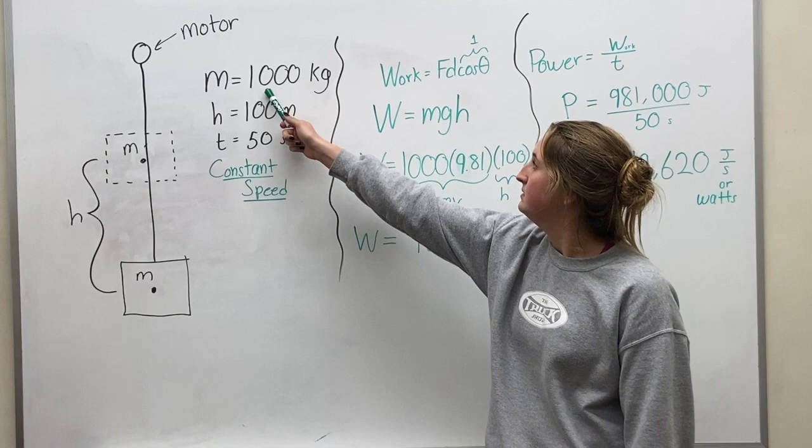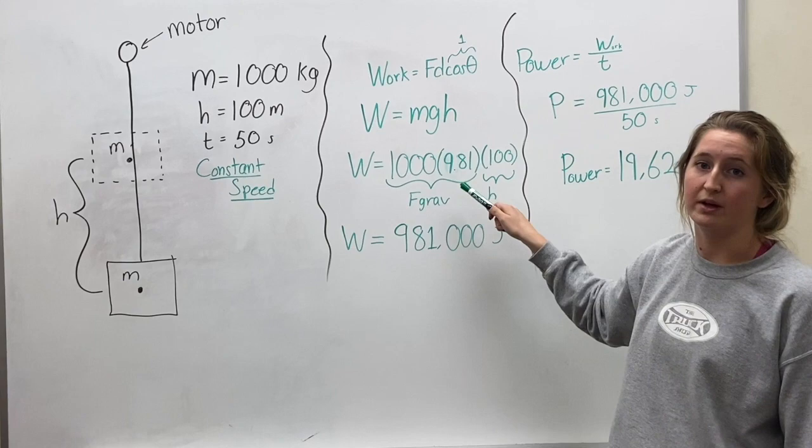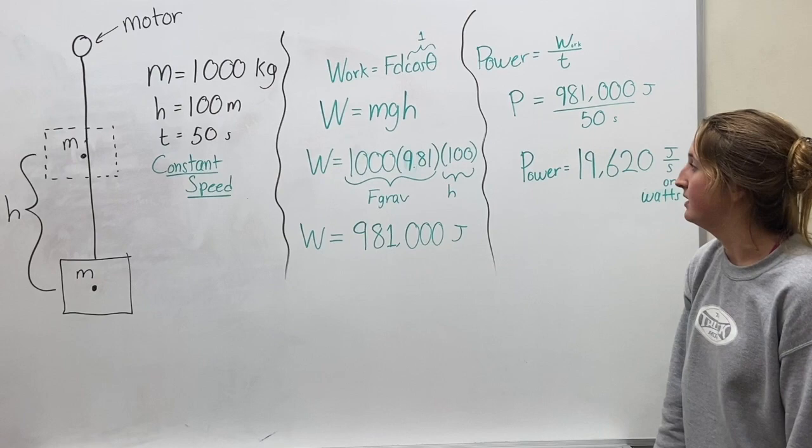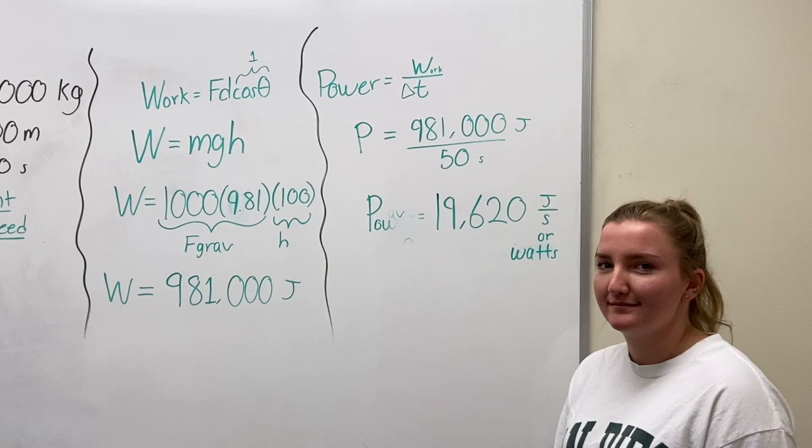And so in the problem, we're given a thousand kilograms is our mass. Our g is 9.81, like always. And then our displacement is h, which is a hundred meters. So then working this all out, that gives us work of 981,000 joules.